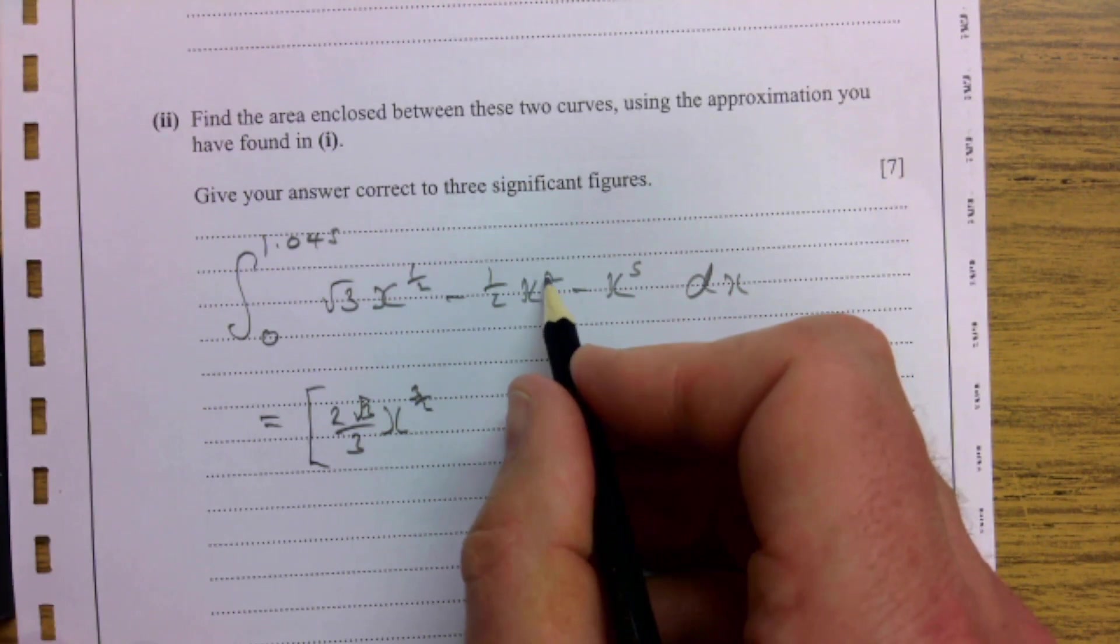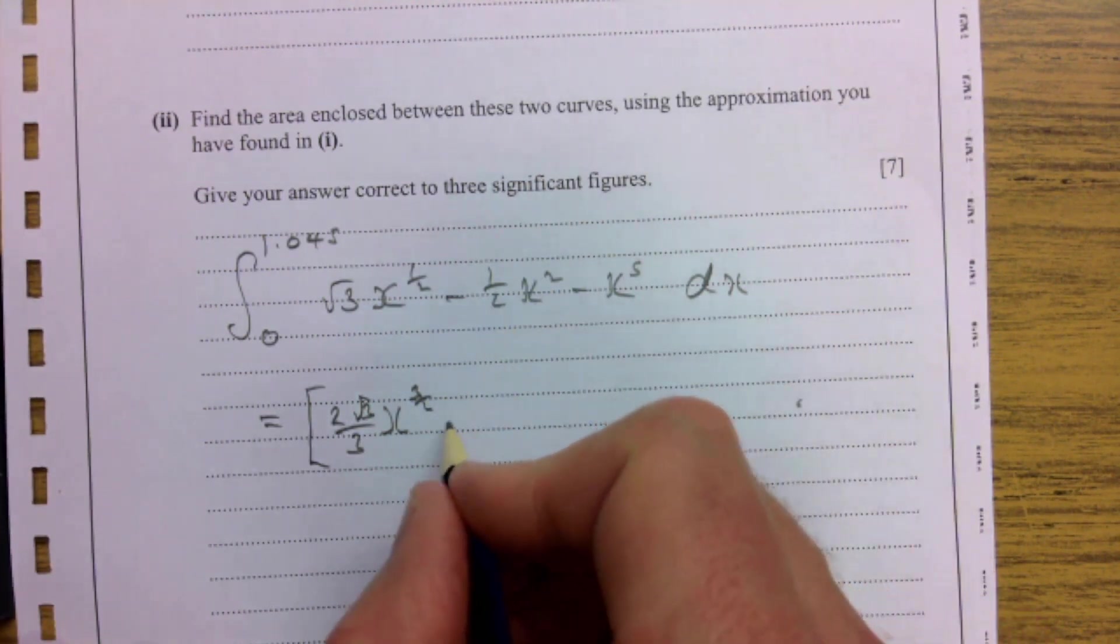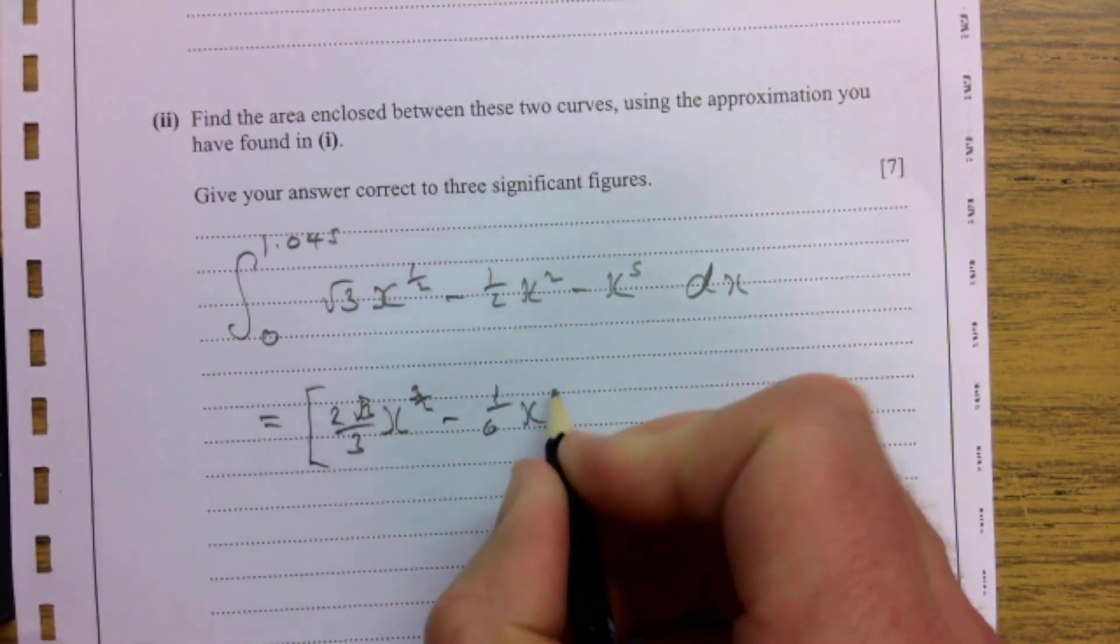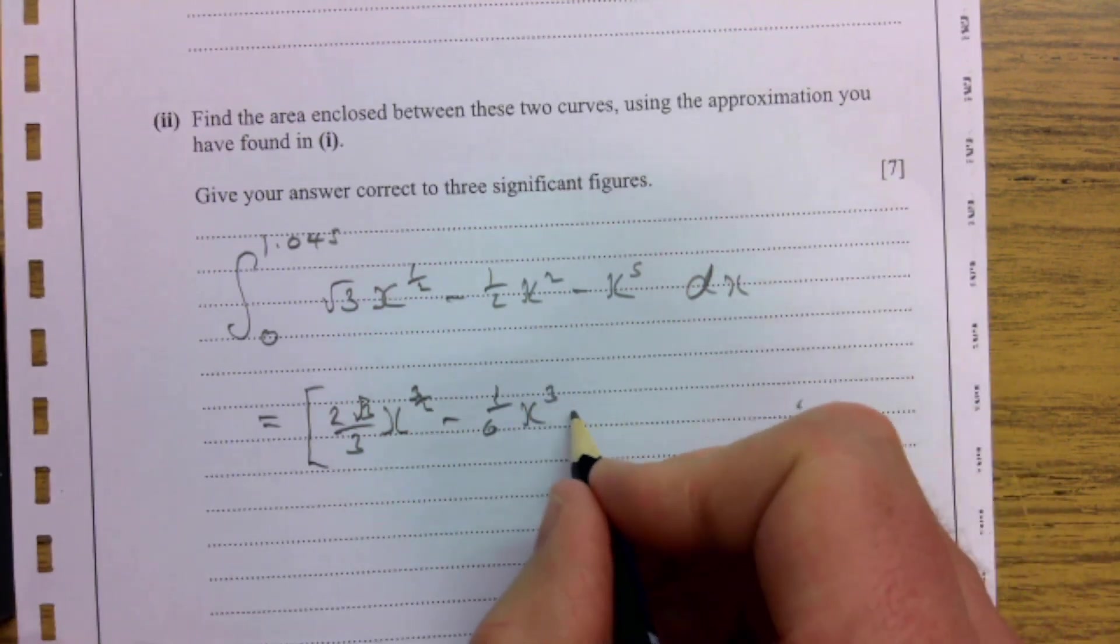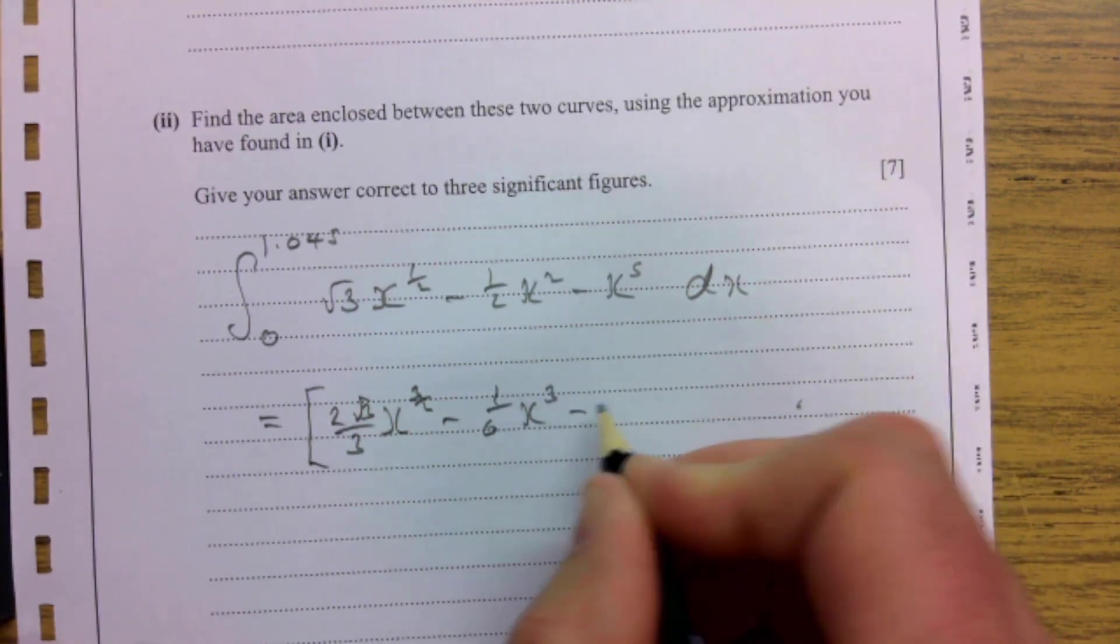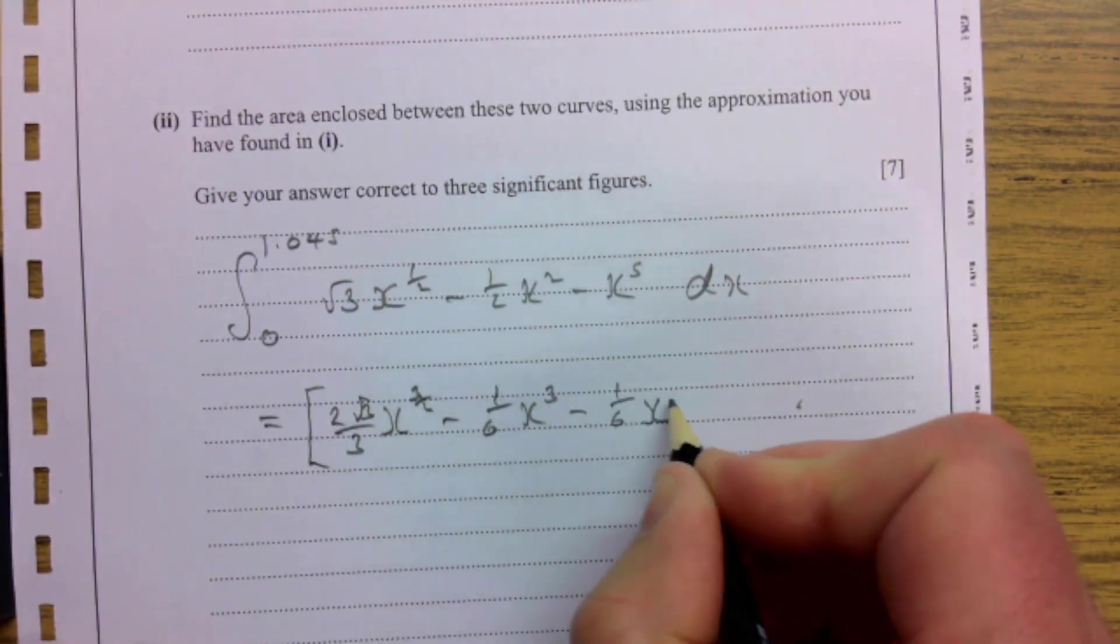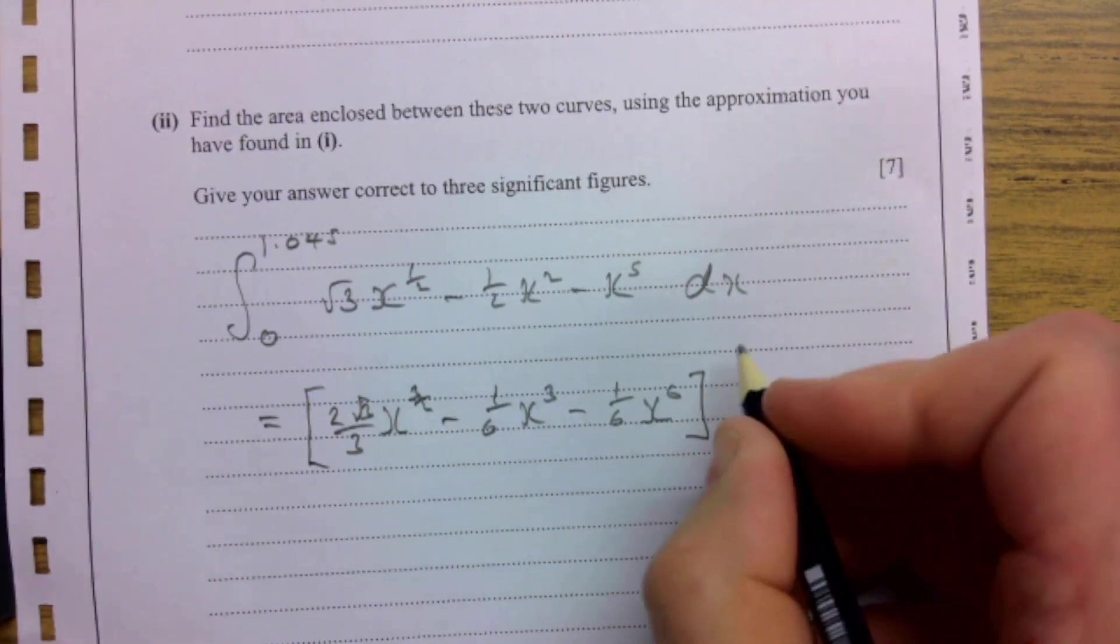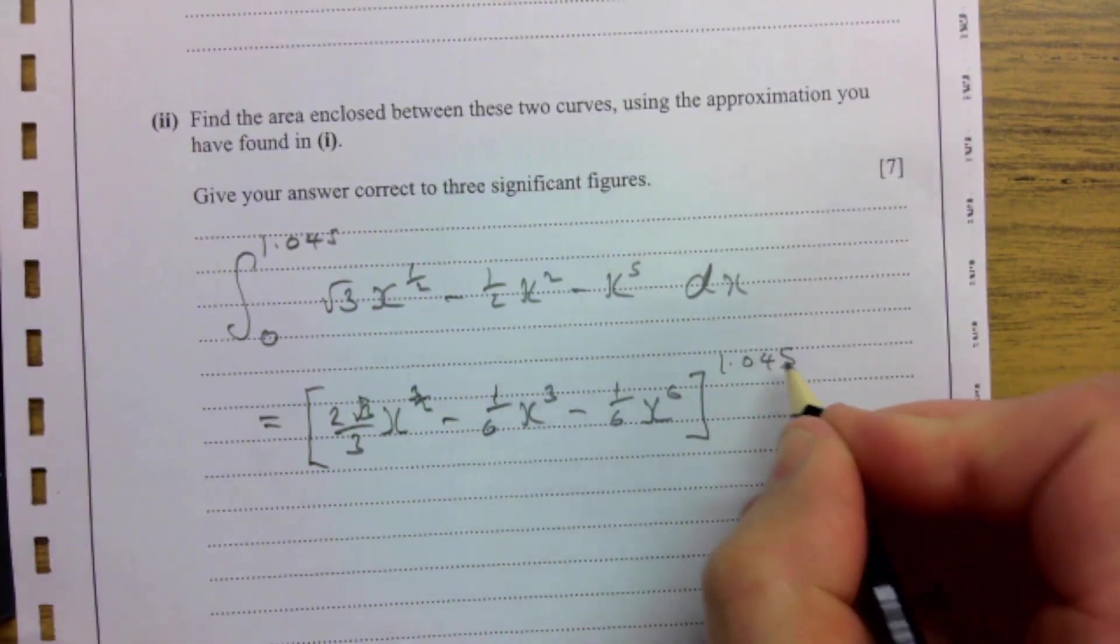Add 1 to the power, divide by the new power. So that's going to be -(1/6)x³. Add 1 to the power, divide by the new power, is -(1/6)x⁶. And that's between 1.045 and 0.